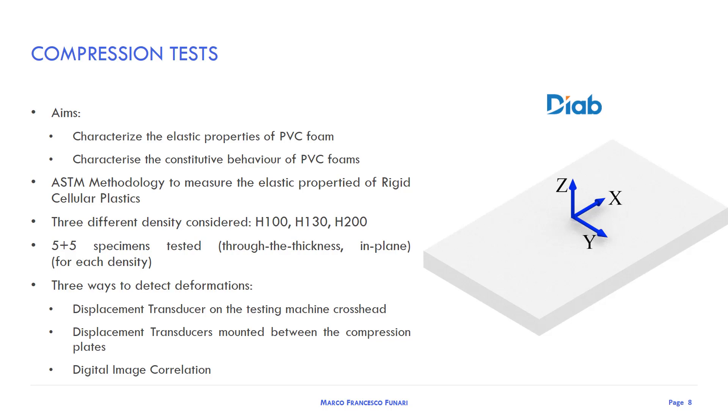In particular, we investigated three different kinds of densities ranging from 100 to 200. We used three ways to detect deformation: the displacement of the test machine, displacement detected by using an external LVDT mounted on the plates of the test machine, and finally the digital image correlation.